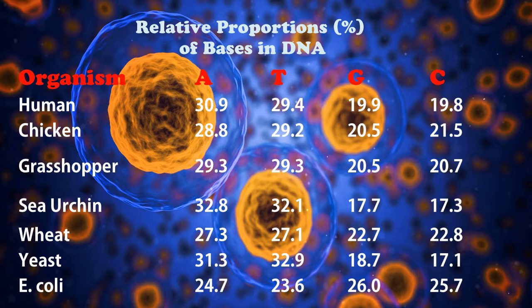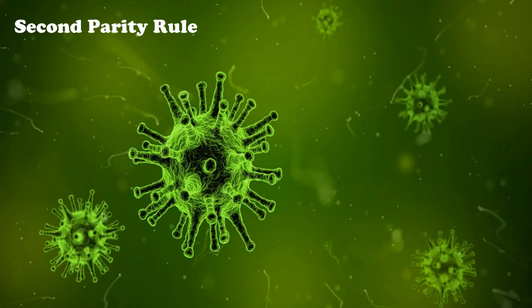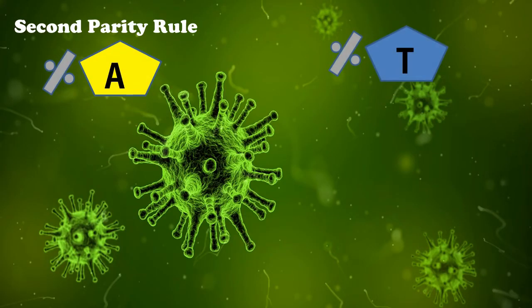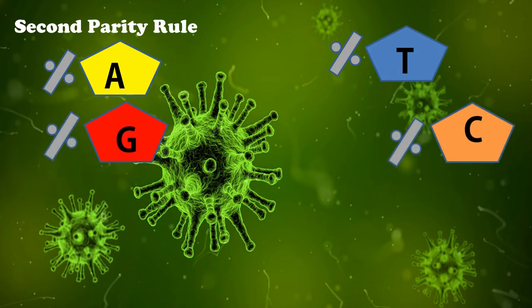There are several organisms which do not have double-stranded DNA — they have single-stranded DNA. So there comes the second parity rule. The second parity rule states that, similar to the first parity rule, A and T are equivalent and G and C are equivalent, but here there is a sign indicating that A and T or G and C are not totally equal.